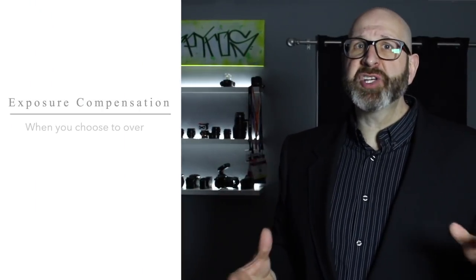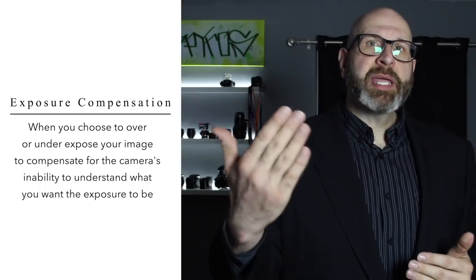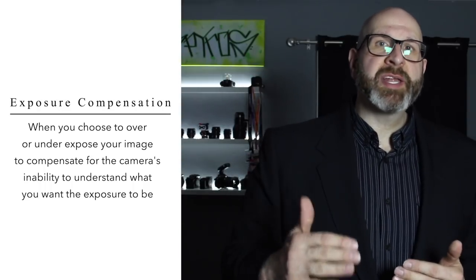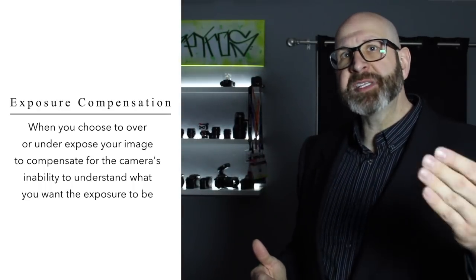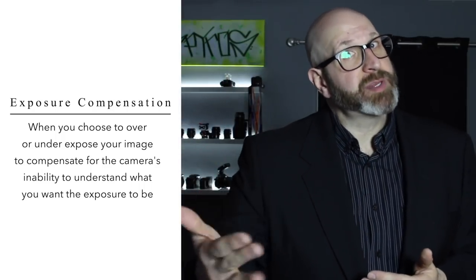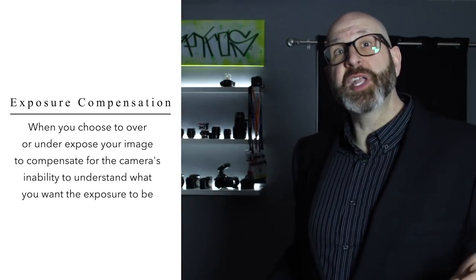There are two aspects of exposure compensation that we need to talk about. The first is the concept of exposure compensation, and the second is the exposure compensation camera function. Exposure compensation is when you as the photographer deliberately over or underexpose an image to compensate for the camera's inability to understand what you want that image to look like. If you're photographing snow and you want the snow to be nice and bright, you compensate for the fact that the camera is too stupid to understand that by overexposing.